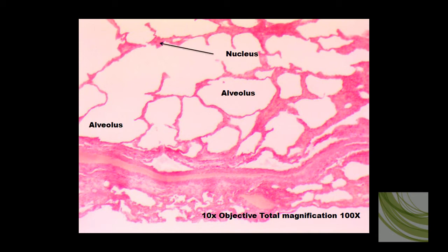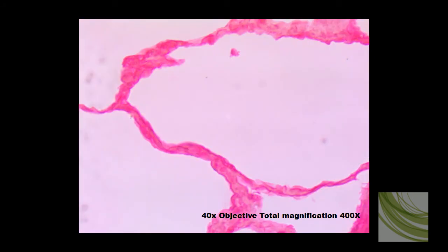At this magnification we can see a few nuclei — there's one, here are the alveoli, there's another nuclei. And by the time we get to the 40x objective, for a total magnification of 400 times, you can see individual cells with nuclei that make up this simple squamous epithelial tissue.